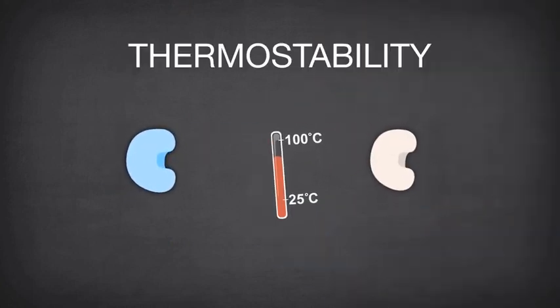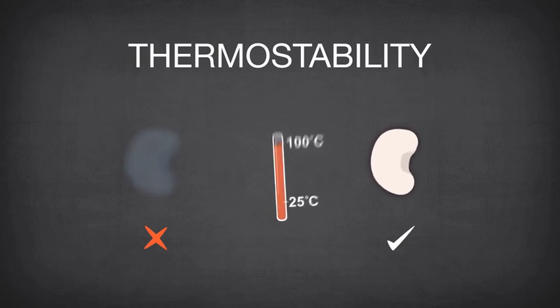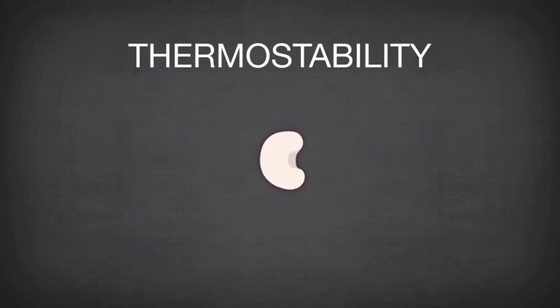Some DNA polymerases can withstand high temperatures longer than others over the course of PCR cycling. This is often described as the enzyme's thermal stability or half-life at a specific temperature.